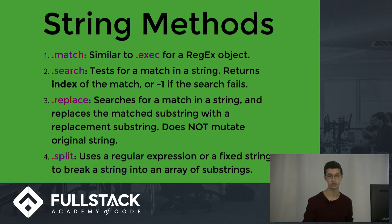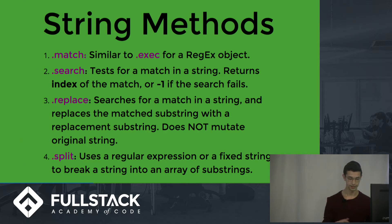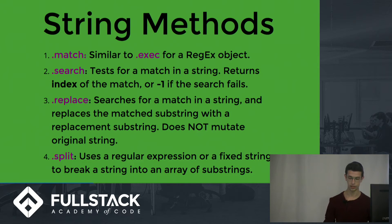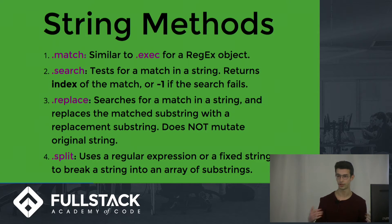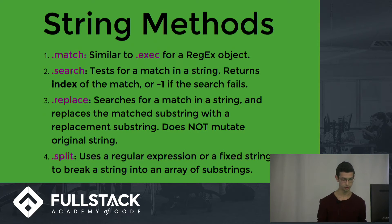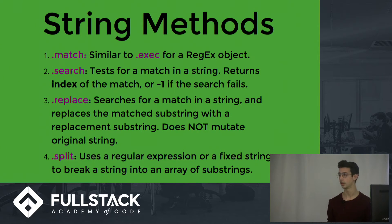On string methods: there's .match, which is extremely similar to .exec on the regex object prototype. There's a .search method which searches for a match in a string and gives you the index where it starts, or negative one if it fails. There's .replace, which is super cool — it can search for a match and replace it with anything you want: a string or even a function that returns the replacement value. And we all know .split, which can split on a string but also on complex regex patterns.